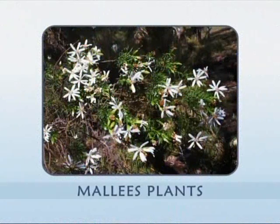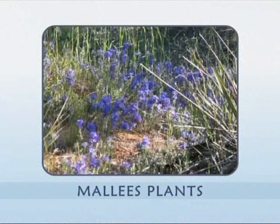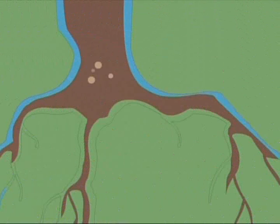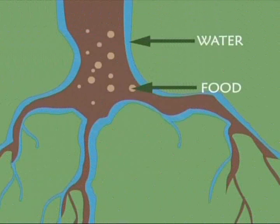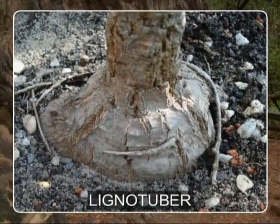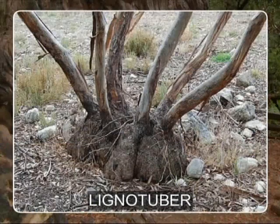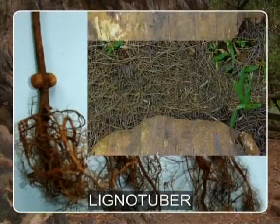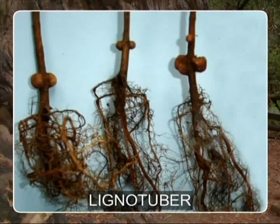It is interesting to know how Mali's stage such a miraculous comeback. Each Mali has a stock of water and food hidden in a swollen root called a lignotuber, which stays safely buried inside the ground. Sometimes as big as a wheelbarrow, lignotubers contain all that Mali's need to get going after a disaster.